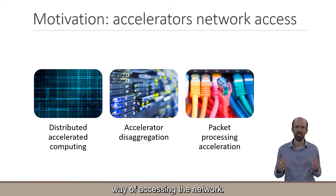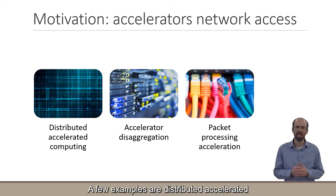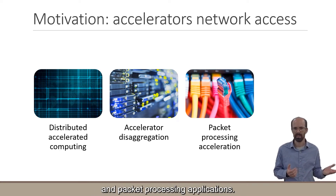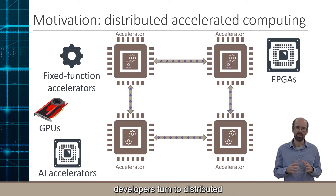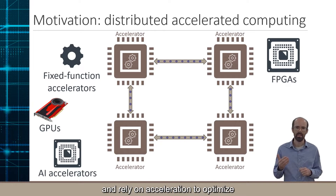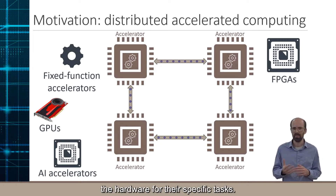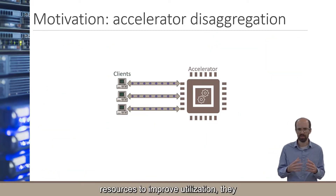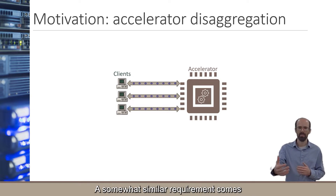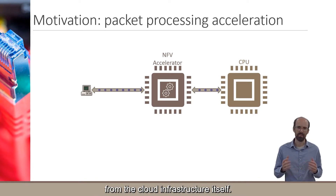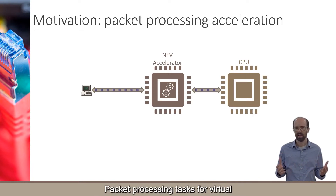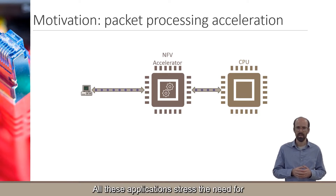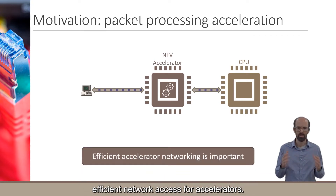Accelerators require an efficient way of accessing the network. A few examples are distributed accelerated computing, accelerator disaggregation, and packet processing applications. With the end of Dennard scaling, developers turn to distributed computing to scale their applications and rely on acceleration to optimize hardware for their specific tasks. As data center operators pool resources to improve utilization, they strive to use disaggregated accelerators. Packet processing tasks for virtual network functions and software-defined networking infrastructure can also benefit from acceleration. All these applications stress the need for efficient network access for accelerators.